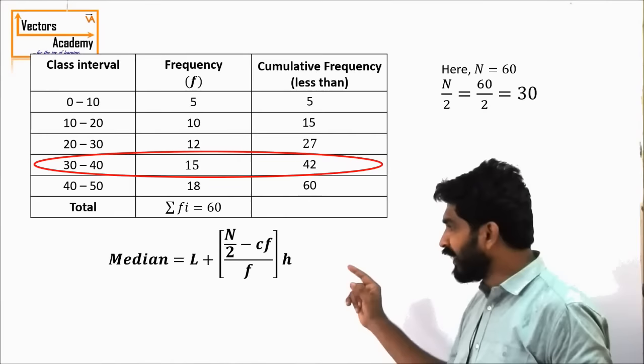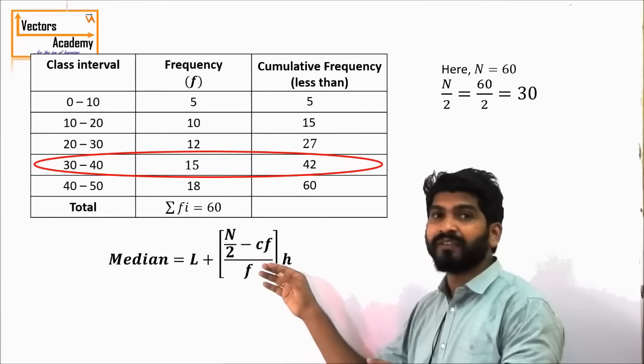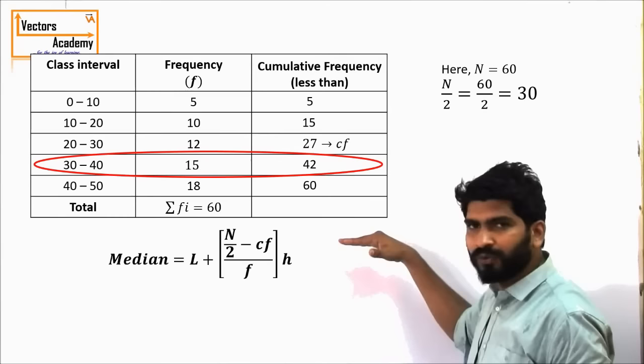n/2, which we have already calculated, is 30. Cf represents the cumulative frequency of the previous class. The median class is the fourth one, and the cumulative frequency of the previous (third) class is 27. So the value of Cf is 27.